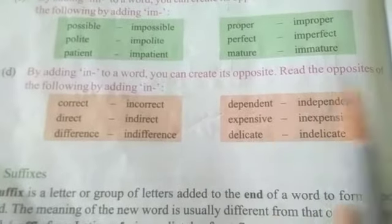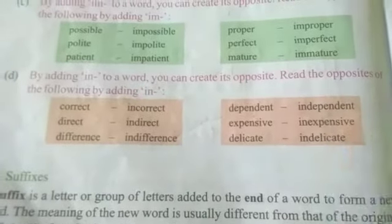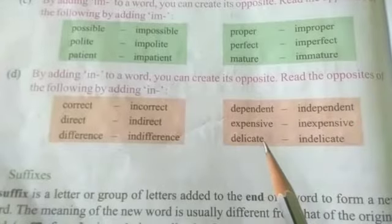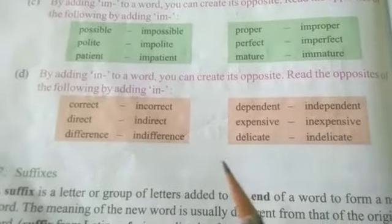Depend — independent — nirbhar, nirbhar nahi. Expensive — mehenga. Inexpensive — mehenga nahi.